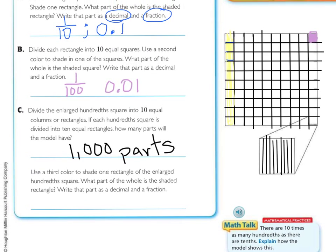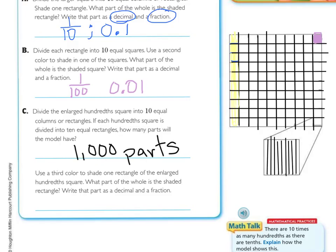So now, we need to use a third color to shade one rectangle of the enlarged hundredth squares, and then answer the question, what part of the whole is the shaded rectangle, write that part as a decimal and a fraction. Press pause and do so.